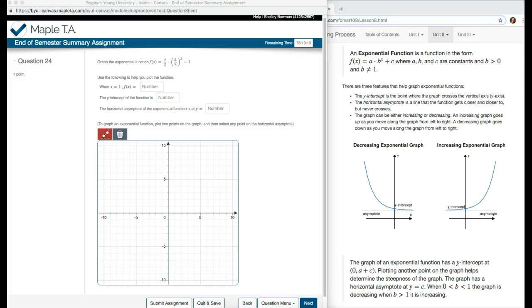End of semester summary assignment, question number 24. Graph the exponential function f of x equals 3 halves times 4 thirds raised to the x minus 1.